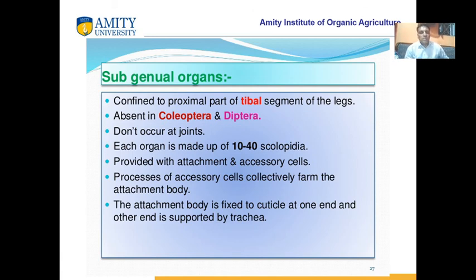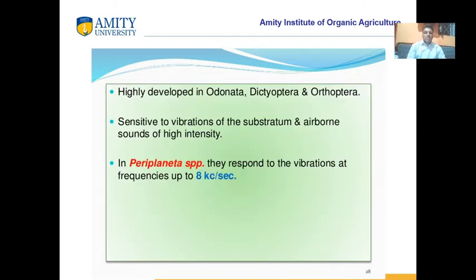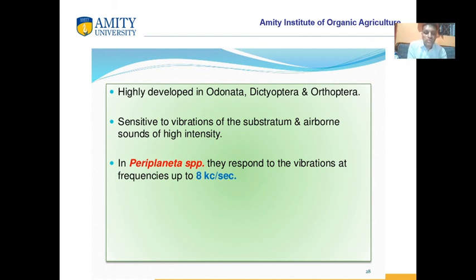Another specialized cordotonal structure is the subgenual organ, confined to the proximal part of the tibial segment of the leg. They are absent in Coleoptera and Diptera. Each organ is made up of 10 to 40 scolopidia. The accessory cells collectively form an attachment body fixed to the cuticle at one end and supported by the trachea at the other. Subgenual organs are highly developed in Odonata, Dictyoptera, and Orthoptera. They are sensitive to vibrations of the substratum and airborne sounds of high intensity. In cockroaches, they respond to vibrations at frequencies of 8 kc per second.